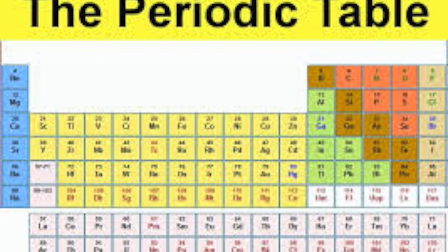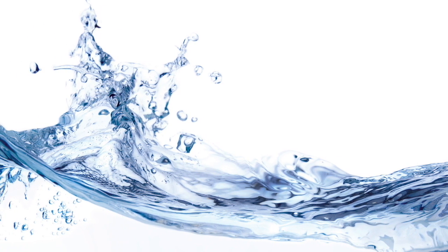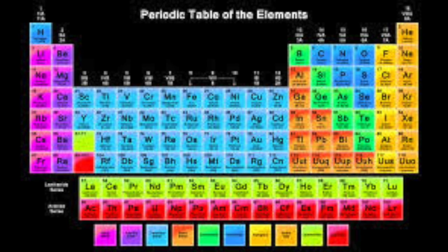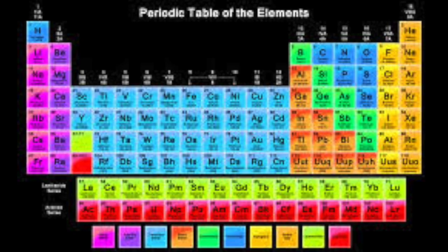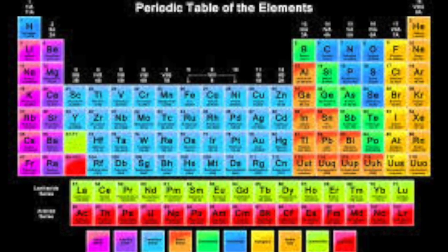In fact, there are 118 known elements. Carbon dioxide and water are not elements because they contain two or more types of atoms. For example, water has hydrogen and oxygen.